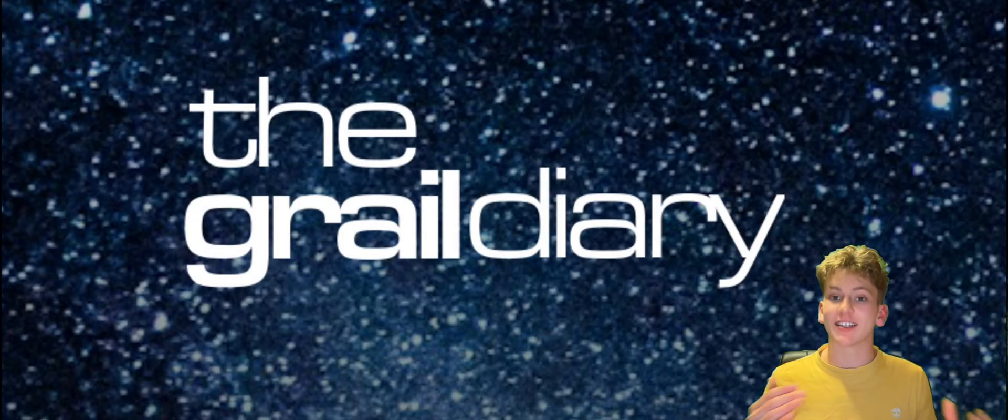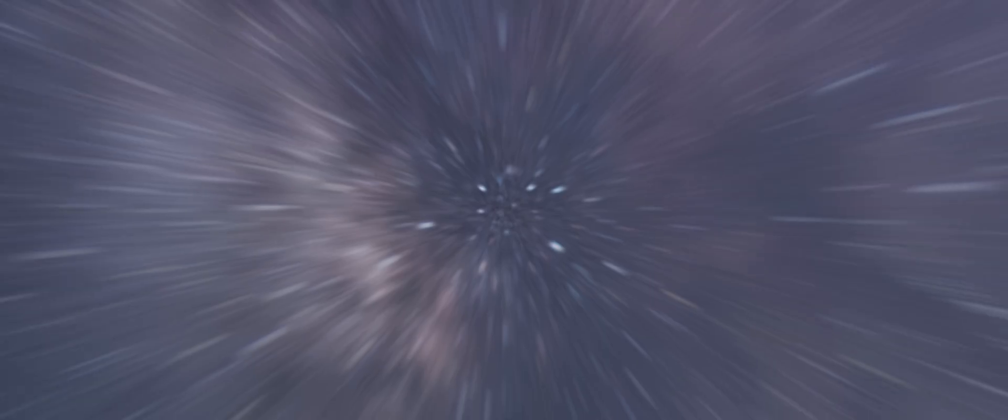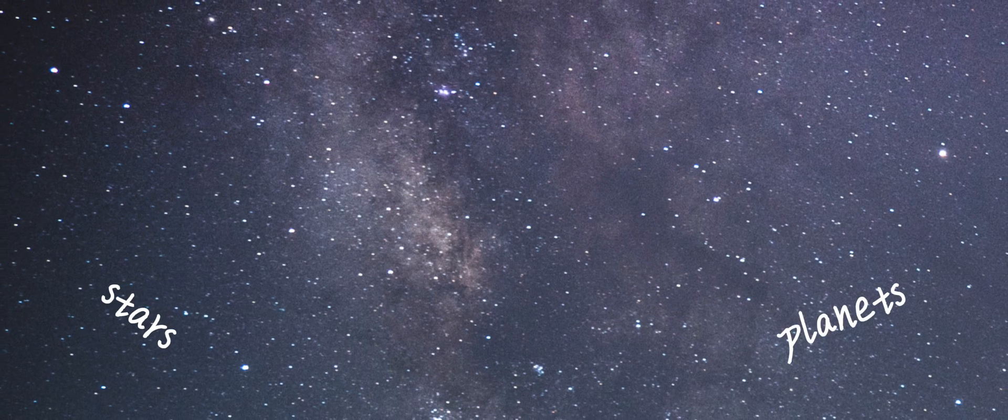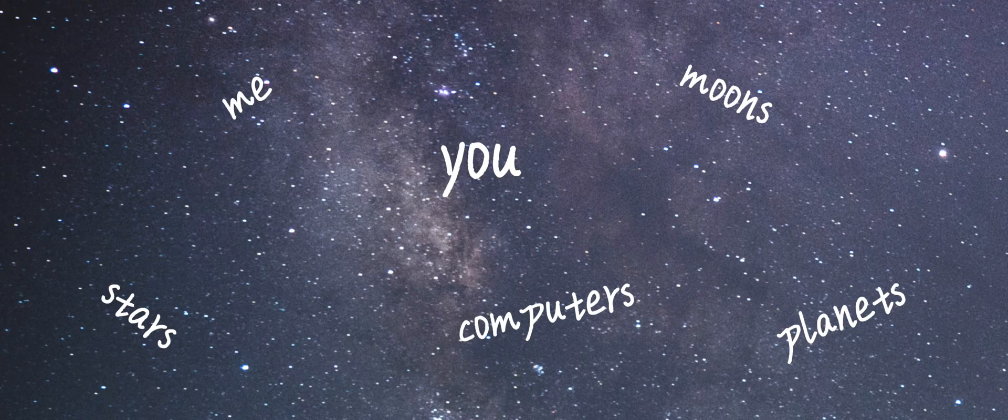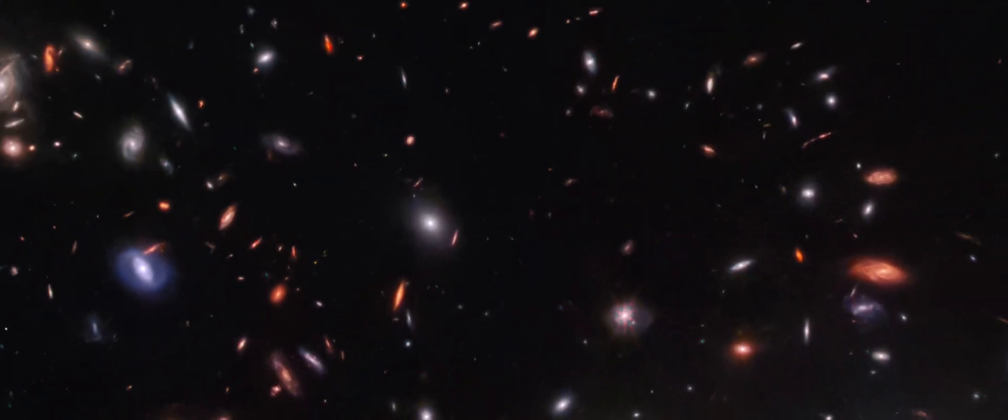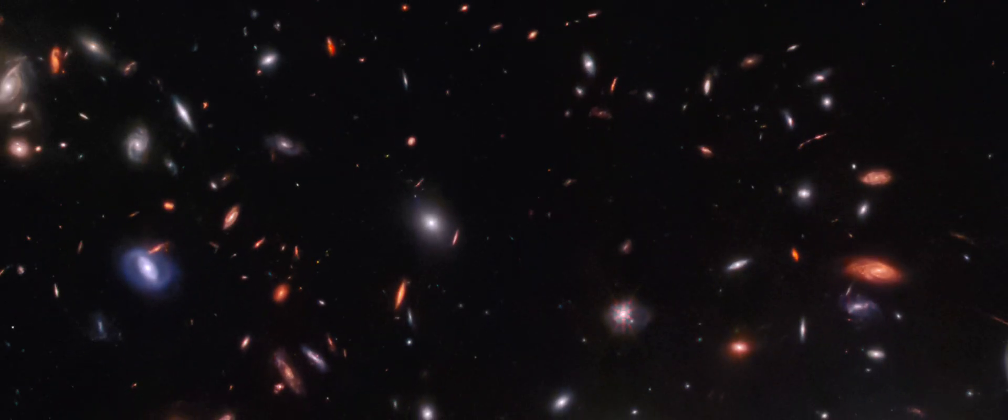On the small scale, this is exactly what happens. Matter condenses, it forms stars, and planets, and moons, and you and me, and computers. But on the large scale, when we zoom out, galaxies tend to be generally unmoving and distant relative to one another.